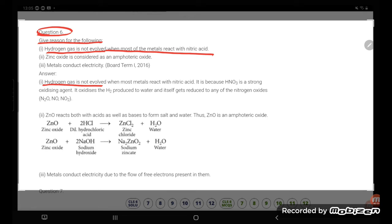Hydrogen gas is not evolved when most of the metals react with nitric acid because nitric acid is a strong oxidizing agent. It oxidizes H2 to produce water and itself gets reduced to any of the nitrogen oxides N2O, NO, or NO2. So this answer is very important, students, that you need to keep in mind.